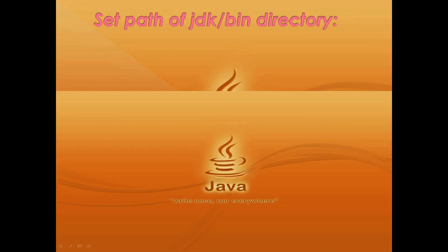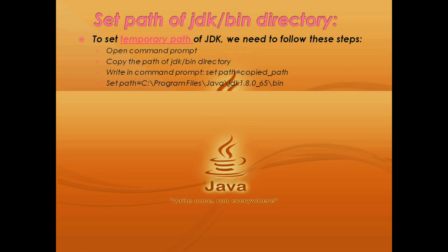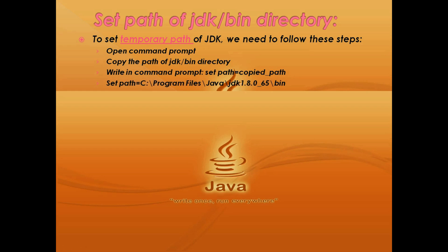After installation is complete, set the path of the JDK bin directory. If we want to set a temporary path of JDK, we need to follow these steps. First, open command prompt, then copy the path of the JDK bin directory. After that, write in command prompt: set path equal to whatever path you copied and paste it here. For example: set path equal C:\Program Files\Java\JDK 1.8.0.65\bin.